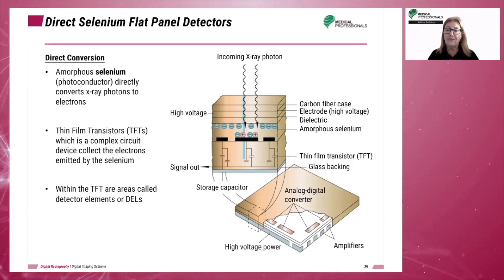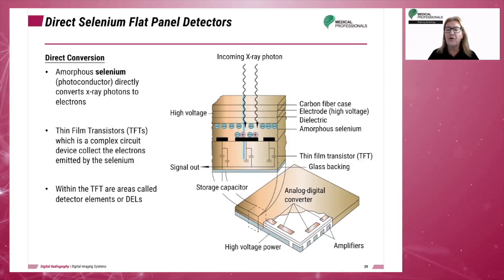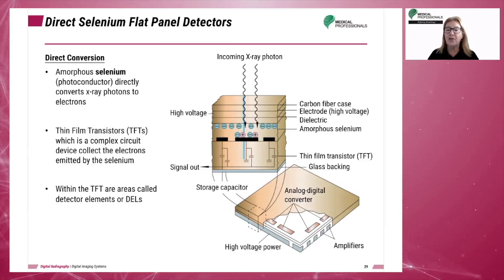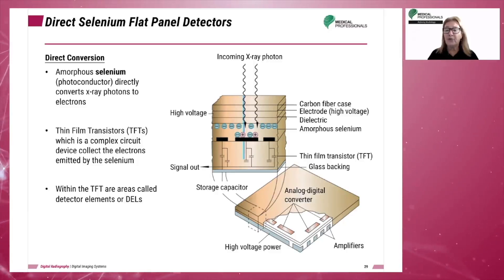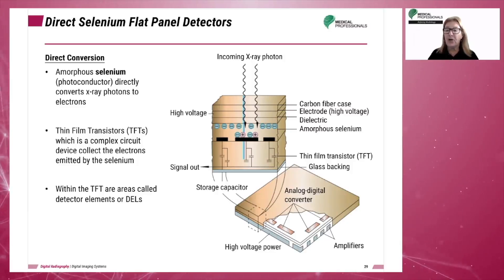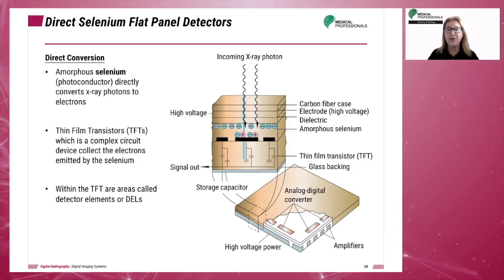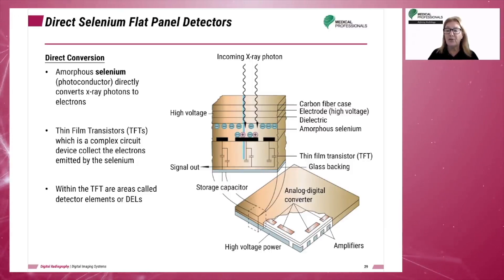The photoconductor used in direct conversion systems is amorphous selenium. Photoconductors are materials that will absorb X-rays and immediately convert them into electrons, which are then collected and stored by the TFT array. Incident X-ray photons interact with amorphous selenium and create electron holes through ionization of selenium. The electric charges are in proportion to the amount of X-ray exposure received.